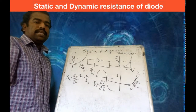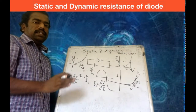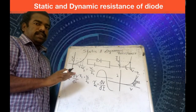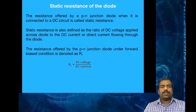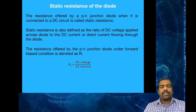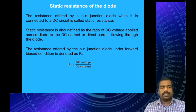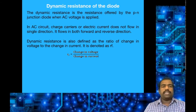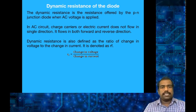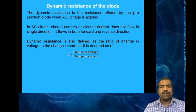So these are the two terms: static resistance and dynamic resistance. Static resistance is the ratio of instantaneous voltage to instantaneous current — it is the resistance offered by a PN junction diode when connected to a DC circuit, equal to DC voltage divided by DC current. Dynamic resistance is the ratio of change in voltage to change in current — it is the resistance offered by a PN junction diode when AC voltage is applied. Hope you understand these two terms. Thank you.